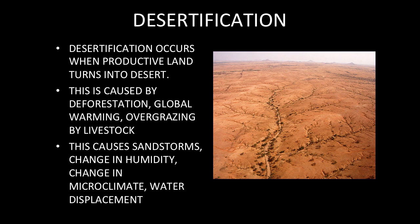Desertification is caused by deforestation of trees and other plants and shrubs in an area, as well as climate change and global warming. It could also be a product of acid rain. If you have very acidic water falling onto a plot of land that needs somewhat neutral or slightly basic water, you can see how that would just kill everything out.